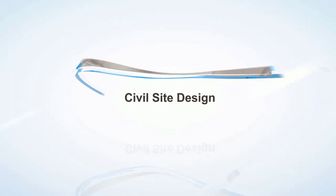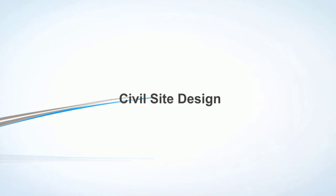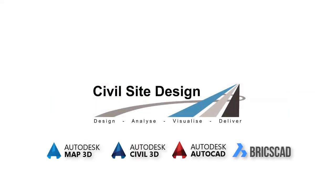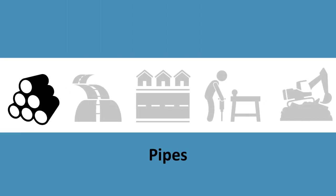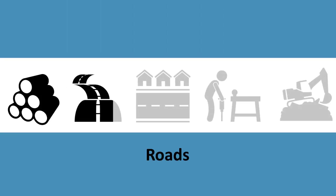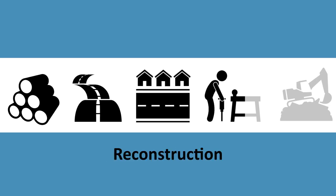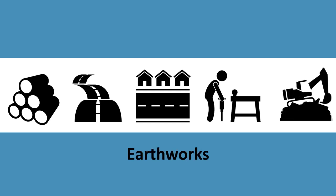This is Civil Site Design, the comprehensive and all-inclusive civil engineering software package built for your CAD platform. Civil Site Design is a multi-discipline software package which sits directly over your existing CAD platform. With integrated design and drafting, it includes a variety of modules for the design of a wide range of services and expertise.